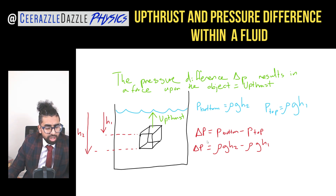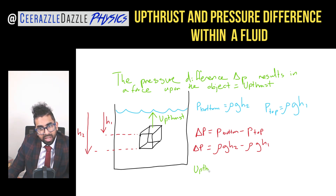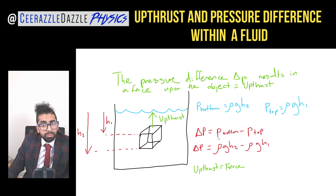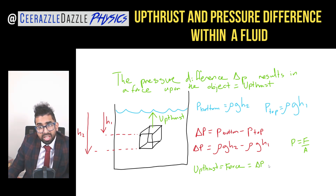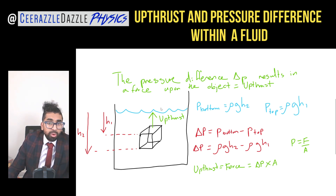How is the upthrust related to the pressure difference? Well, the upthrust is a force acting upon the object. And the link between pressure difference and force comes from pressure equals force divided by area, so force — the upthrust — is therefore equal to the pressure difference times by the area.